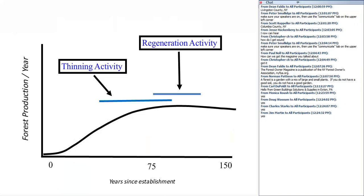Thinning is an activity that happens during the middle growth phase of a forest, and its intended purpose is to improve the current trees. Most of our forests are even-aged, or made up of cohorts of even-aged trees. We're always working with essentially an age class and trying to move that age class from immaturity to maturity. We want the best trees as they gain maturity to be growing faster and increasing in value. The focus of thinning is to improve growth, quality, and species composition of that particular age class.